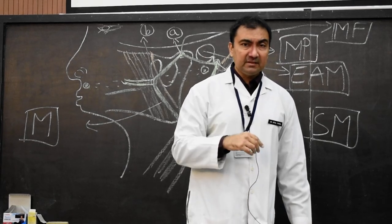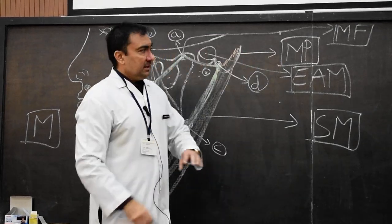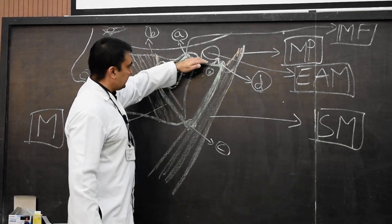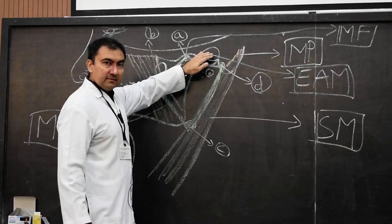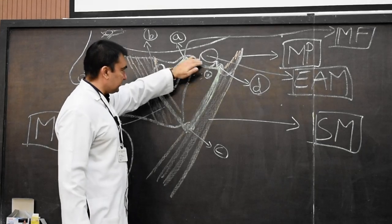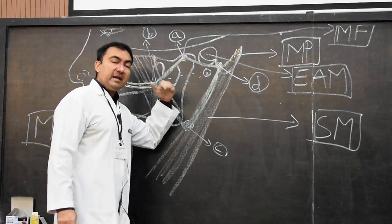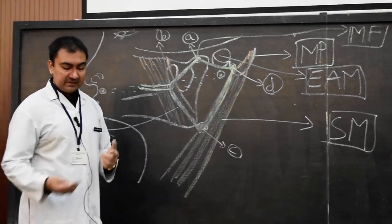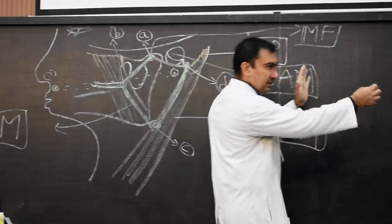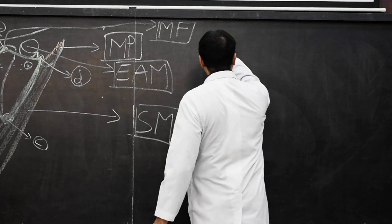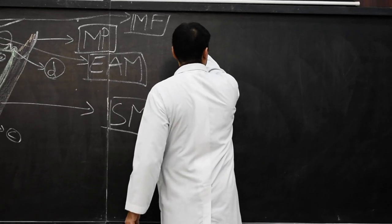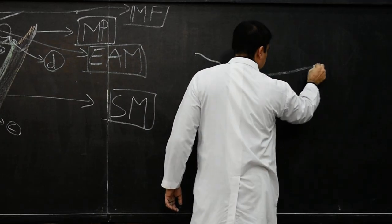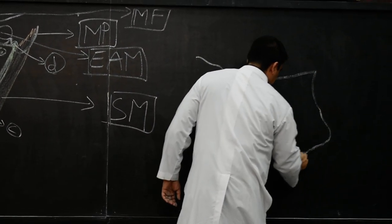Regarding the surfaces, there are four: the superficial surface, the superior surface, the anteromedial surface, and the posteromedial surface. I am going to draw a diagram here to show these surfaces.